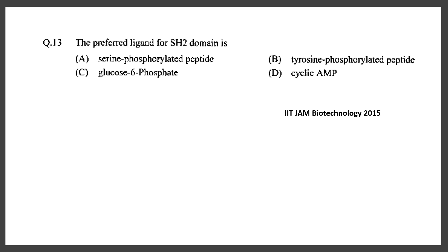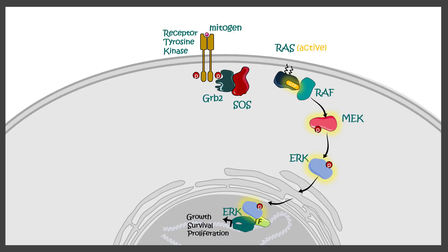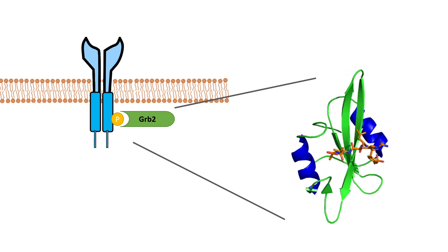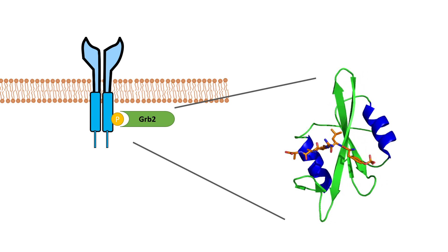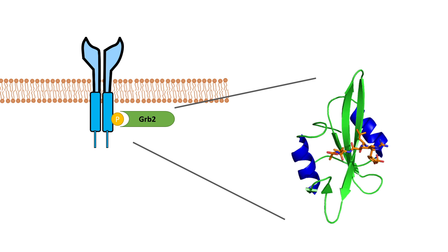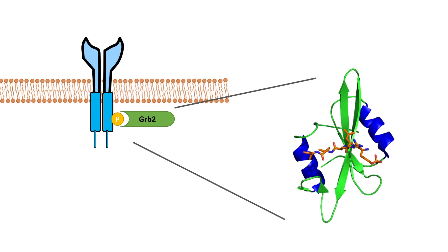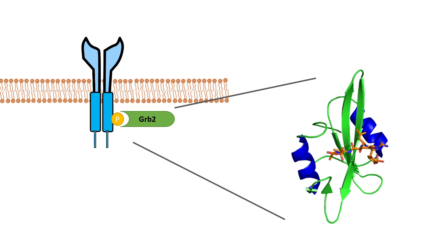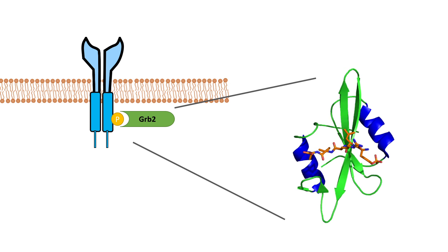Another question asks: the preferred ligand for the SH2 domain is — options include serine-phosphorylated peptide, tyrosine-phosphorylated peptide, glucose-6-phosphate, cyclic AMP. The correct answer is phosphotyrosine residues. Adapters such as GRB2 in the MAP kinase signaling pathway contain an SH2 domain that recognizes phosphotyrosine residues. Overall, the most important signaling pathways to revise are GPCR types including Gs and Gq signaling, the MAP kinase pathway, nuclear receptor family, and the nitric oxide/cyclic GMP pathway.